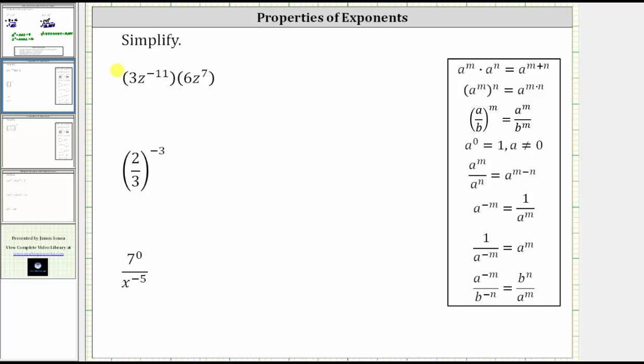We are asked to simplify each expression. We have three z raised to the power of negative 11 times six z raised to the power of positive seven.